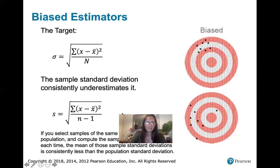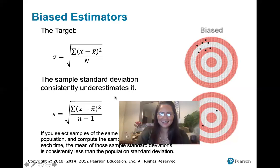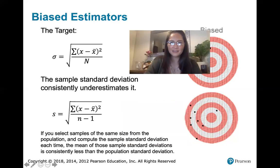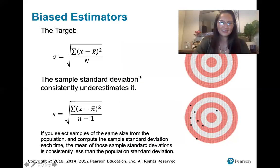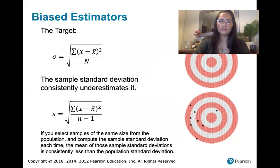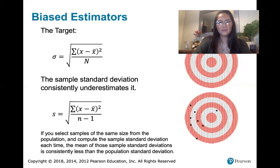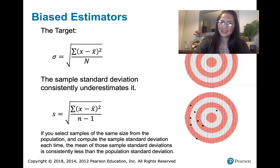If you collect samples of the same size from the population and compute the sample standard deviation every time, and then look at all of those sample standard deviations and compute their mean, the mean of those sample standard deviations will turn out to be consistently less than the population standard deviation. So it's systematically underestimating the value of the population standard deviation, and that's a problem. That makes it a biased estimator.